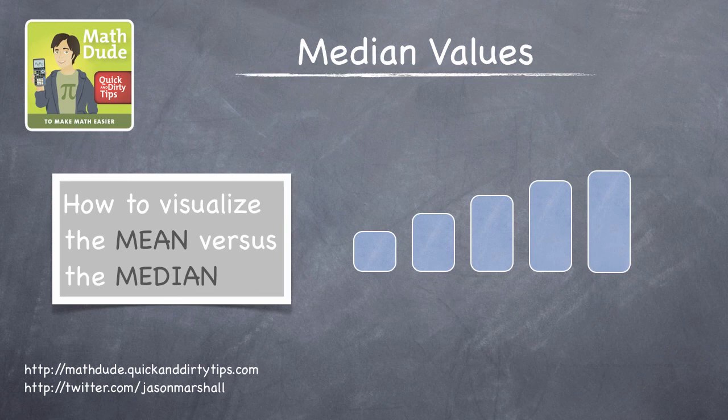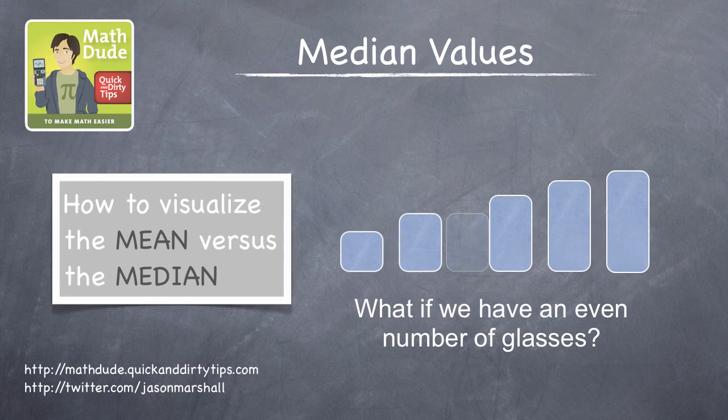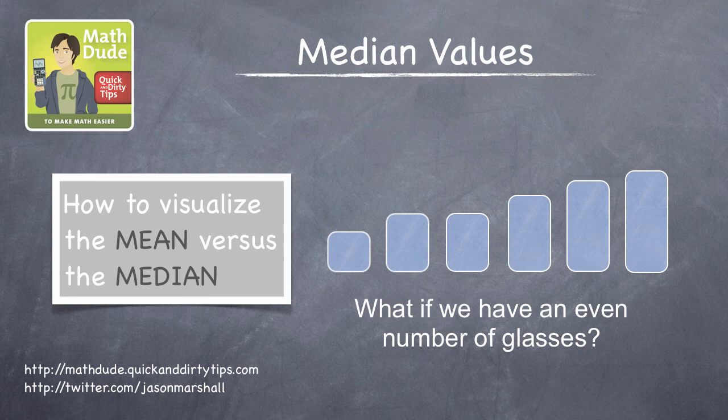This works great when the number of glasses is an odd number, but what if we have an even number of glasses, say six instead of five? How can we find the median value then? Is it impossible since there isn't actually a middle value? No, not impossible. We just need to define what we mean here.